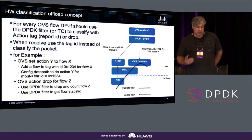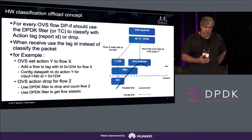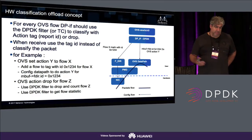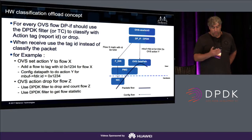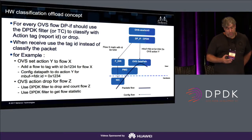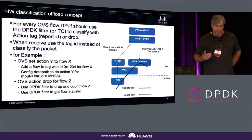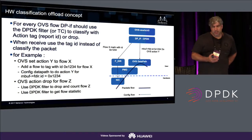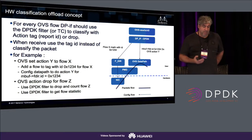When a packet is received by the software and it has a flow ID, you know it's related to a specific rule and you don't need to classify it further. For example, take an OVS 'set action Y on flow with classification X.' We split this into two parts: we add a hardware rule to tag flows matching type X with a number, and configure the software data path so that when it gets packets with those tags, it can directly execute the actions without any further classification.